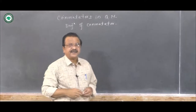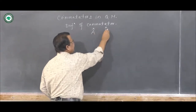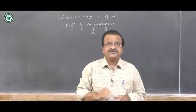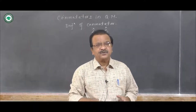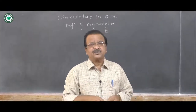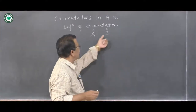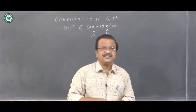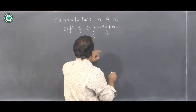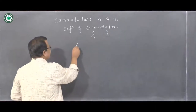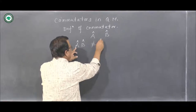Let A and B be any two arbitrary operators representing some physical quantities. We know that in quantum mechanics there corresponds an operator to every physical property or physical quantity, such as energy, momentum, and so on. So these two operators represent such physical quantities or classical dynamical variables. Many times, if A and B are any two arbitrary operators, then AB may not be the same as BA.